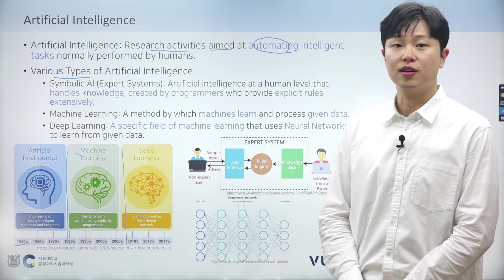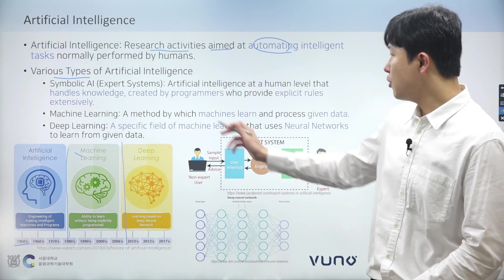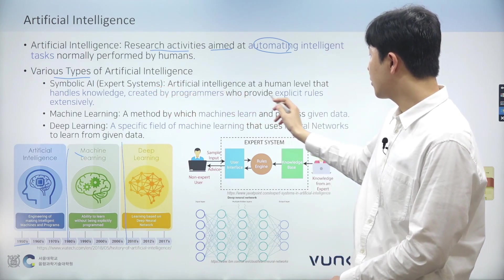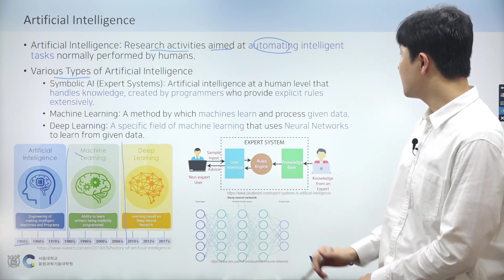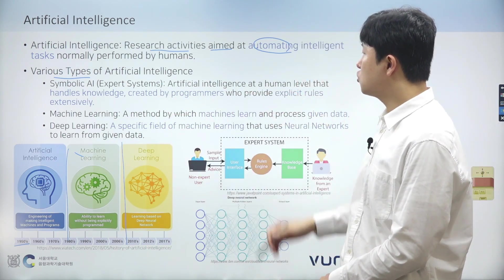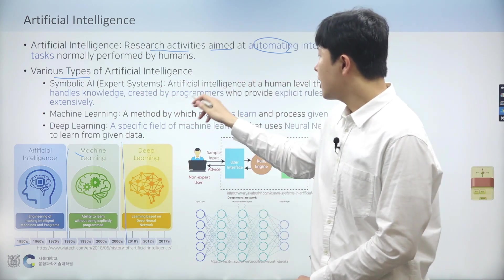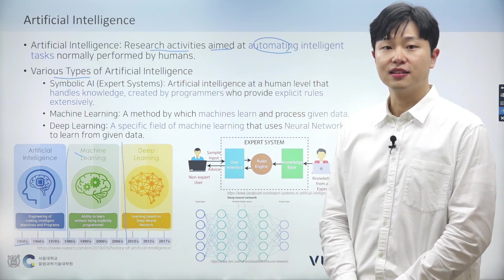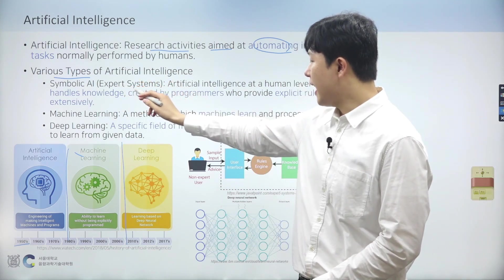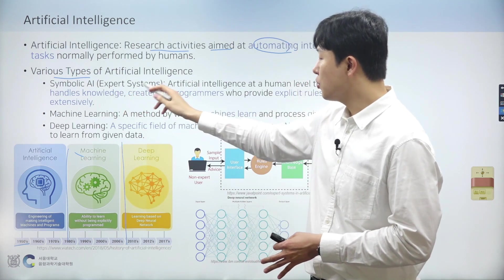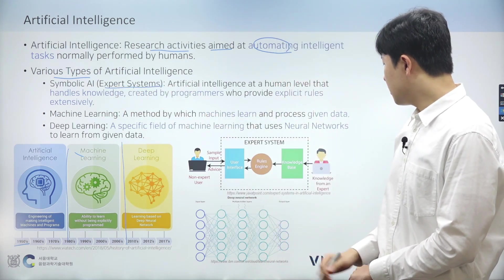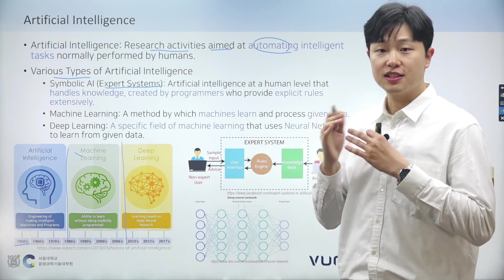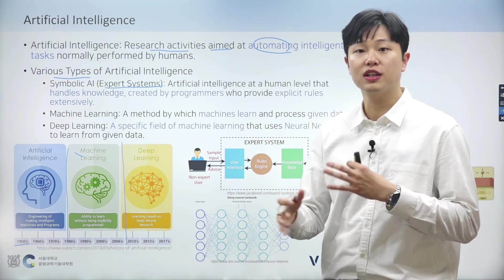We'll provide a specific example to help better understand how ML differs from traditional AI. Symbolic AI is defined as artificial intelligence that handles knowledge created by programmers who provide explicit rules extensively. To put symbolic AI in simpler terms, symbolic AI involves programming computers to use rules and symbols to mimic human reasoning and decision making. This approach allows machines to perform tasks like problem solving and understanding language by manipulating symbols in a way that mimics logical thought processes. To dive deeper into symbolic AI, let's take a look at expert systems, a type of symbolic AI. Expert systems involve storing extensive knowledge from human experts and implementing programs that execute actions based on explicit, well-defined rules.